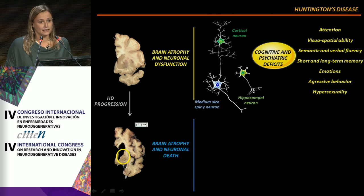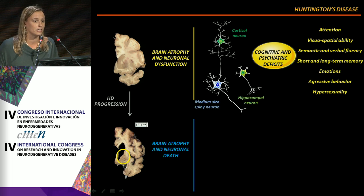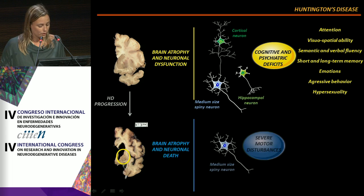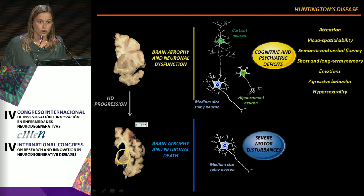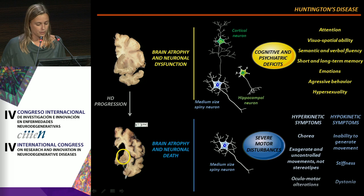At later disease stages, this brain atrophy and neuronal dysfunction is accompanied by neuronal death, particularly in the medium-sized spiny neurons in the caudate and putamen nucleus, which are responsible for severe motor disturbances in HD patients.